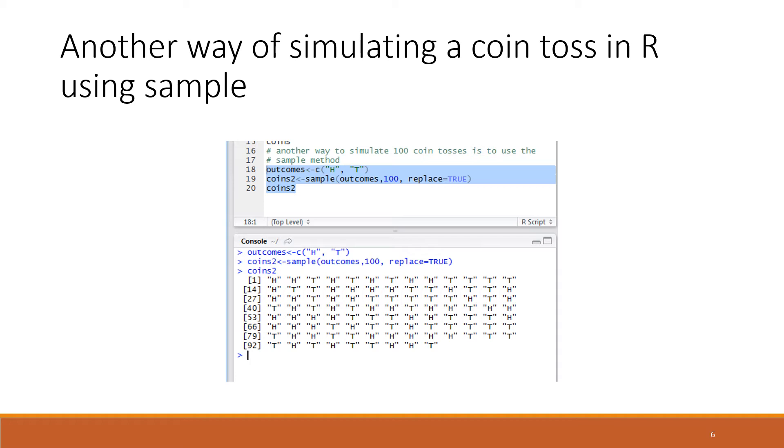Next we're using the sample function with three arguments. The first is outcomes, that's the H and the T. Next comes the argument of 100, saying we want 100 of them. Replace equals true means that if I've pulled out an outcome of an H, then I replace it and can get another H.